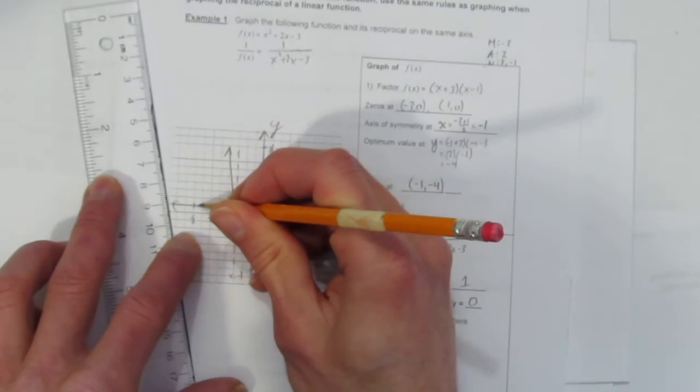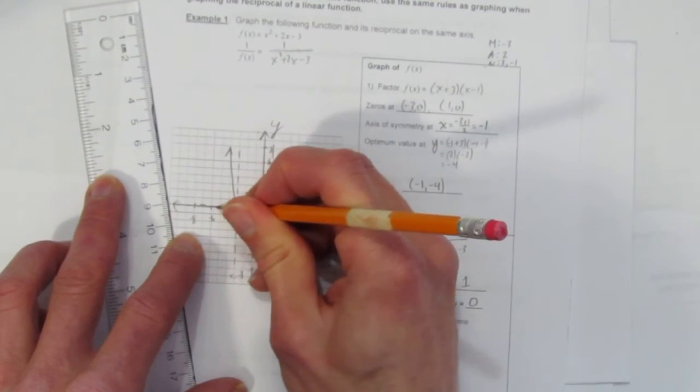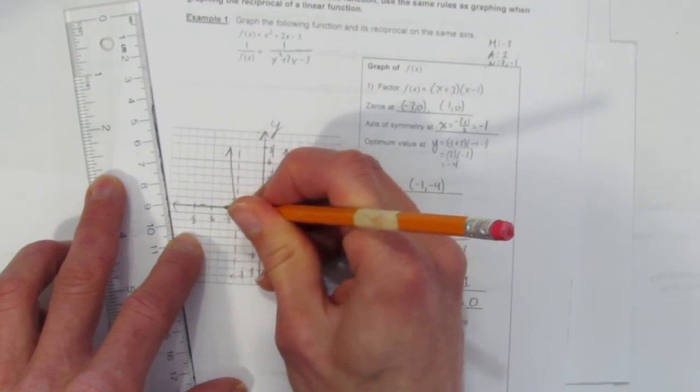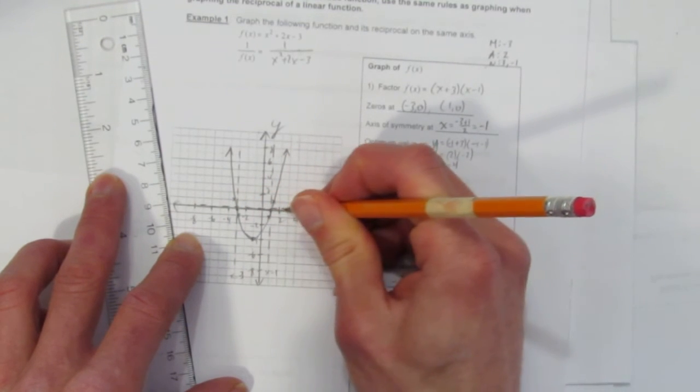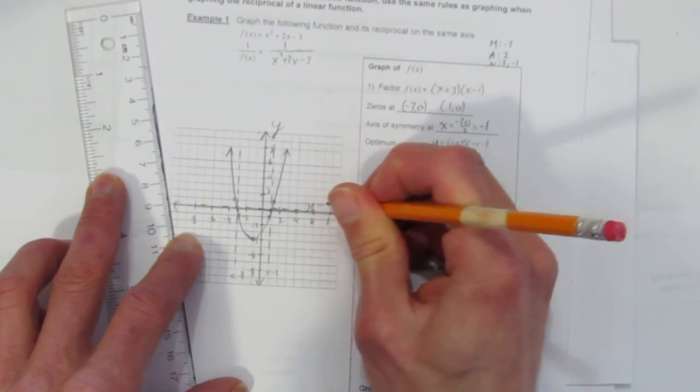We have a horizontal asymptote. Again, somehow you have to make these ticks clear so the reader can see there's some sort of asymptote going on here at y = 0.